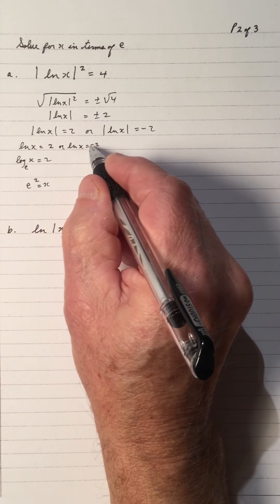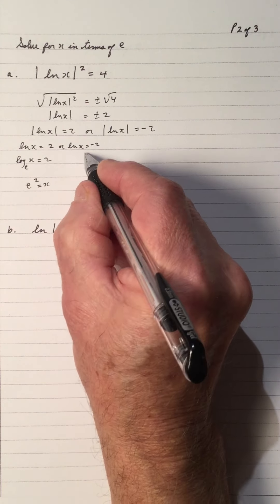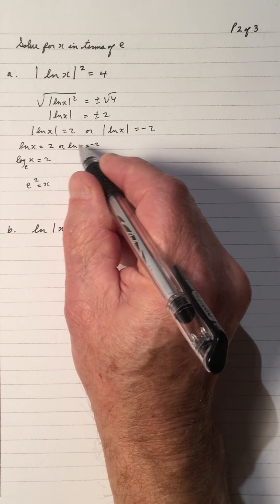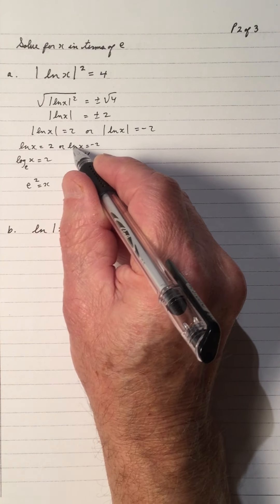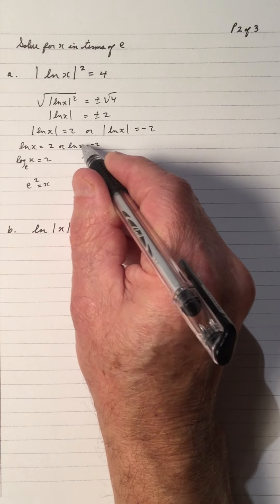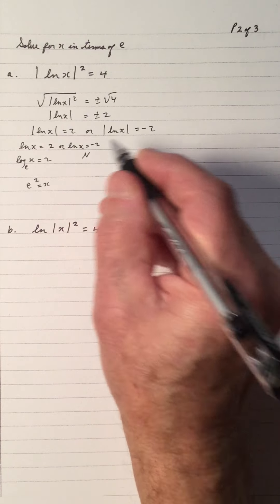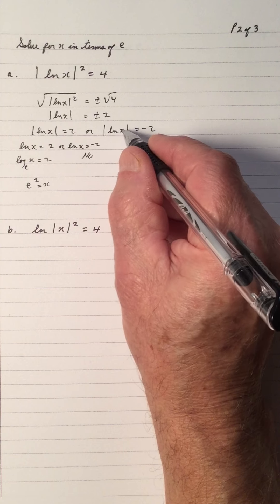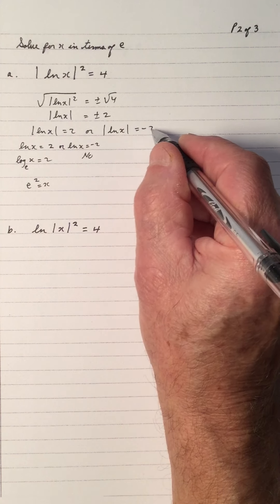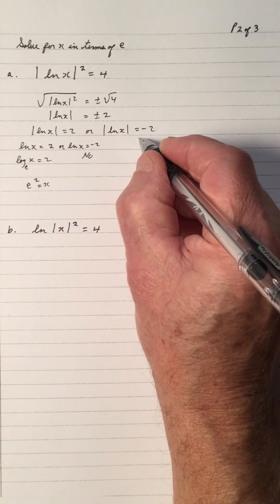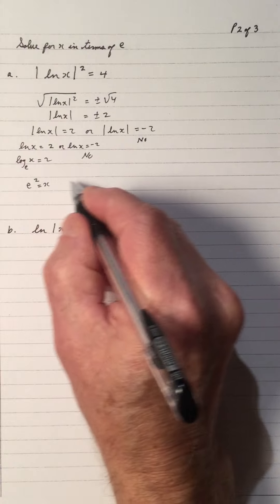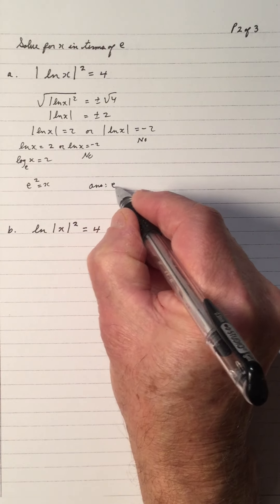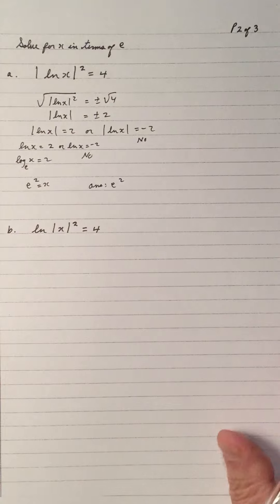For ln x equals negative two: the ln, or log, of a number cannot be negative. And the absolute value of ln x equals negative two is impossible since absolute value is always positive — so that's a no. The answer to this one is x equals e².